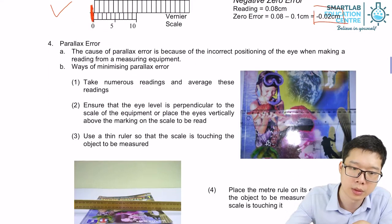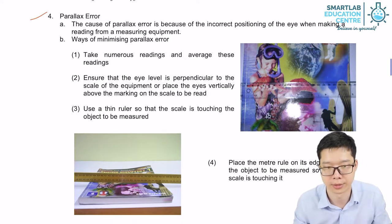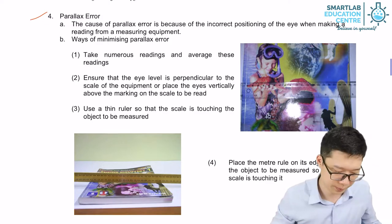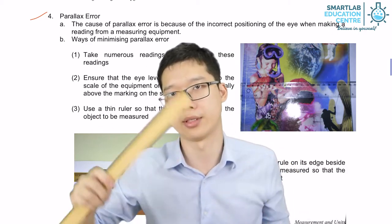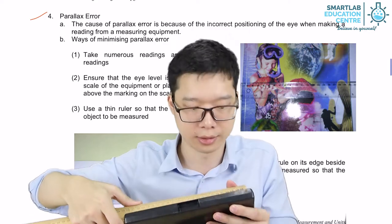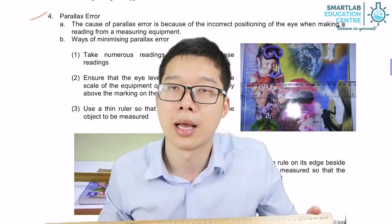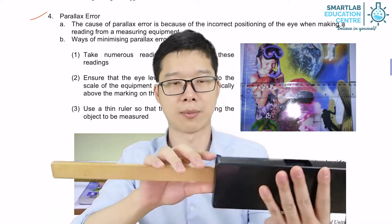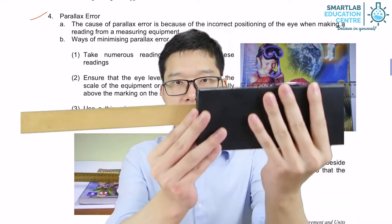The next type of error we are going to introduce today is parallax error. For example, this is a case and a vernier caliper. This is a half-meter rule. If I'm using the half-meter rule to measure the length of the case, I must put my eyesight, I must place the ruler, the very end, the very edge where I want to take reading.